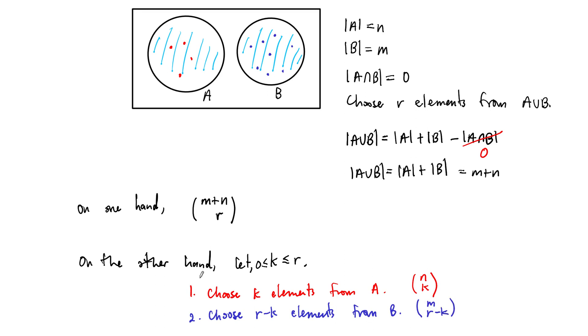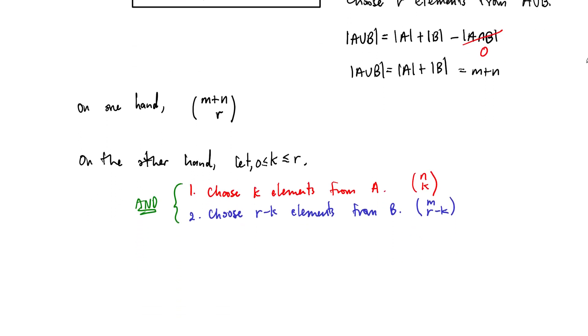And we have to, this is an and. This statement is an and. So we have to do both of these. If we and, we choose from one set and we choose from the other, that means we need to multiply them. So this means for our fixed k, for our fixed choice of k, the number of ways that we can choose k elements from A and the rest of them from B is going to be n choose k times m choose r minus k.